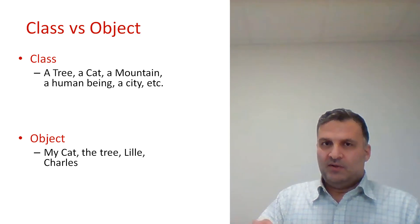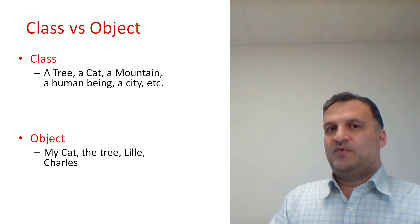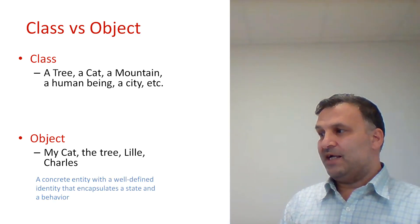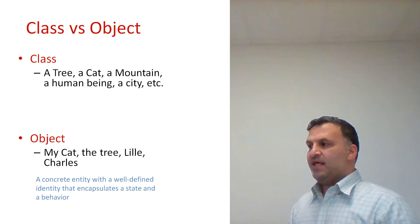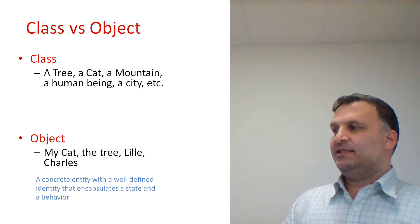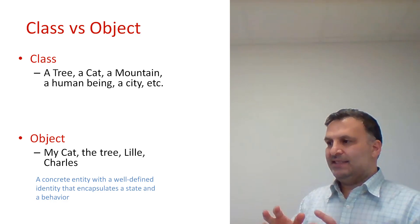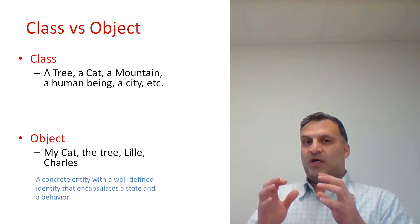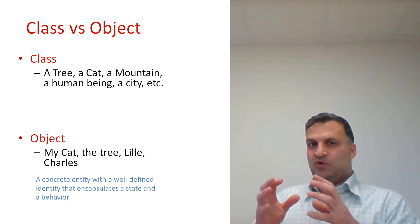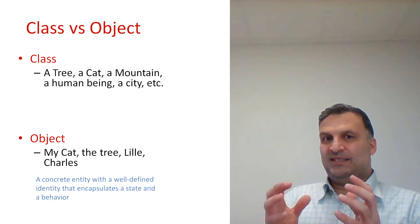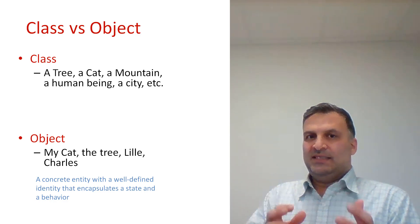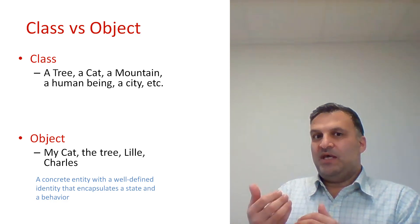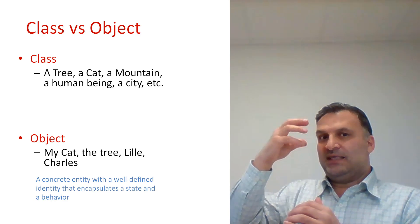An object is a concrete entity with a well-defined identity that encapsulates a state and a behavior. When we talk about a specific person like Charles, for example, we talk about a state — we can say he is fat, he is angry. We can talk about real behavior, not only abstract behavior.